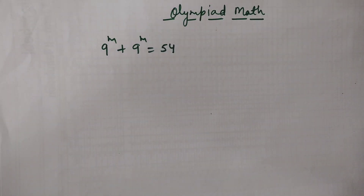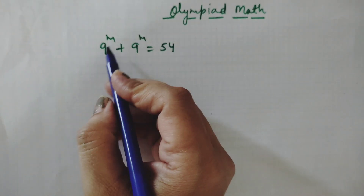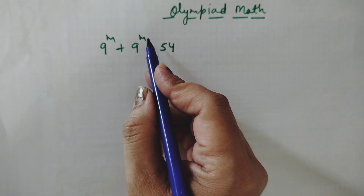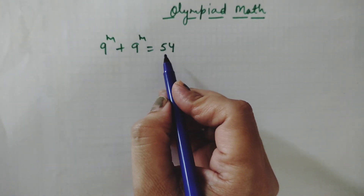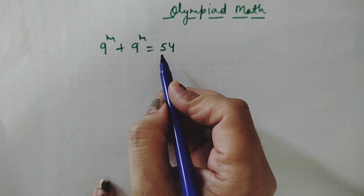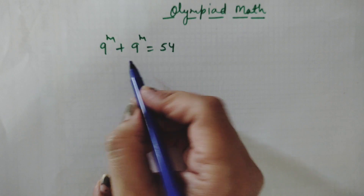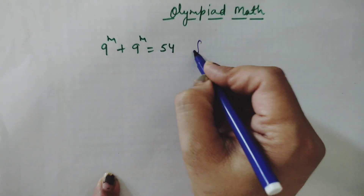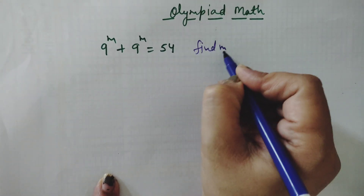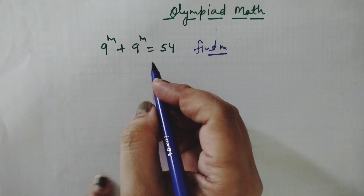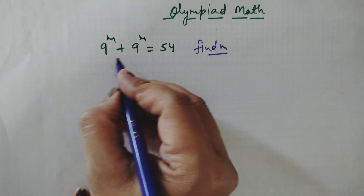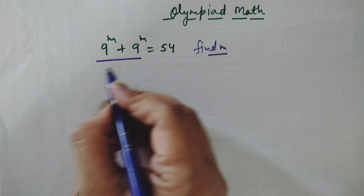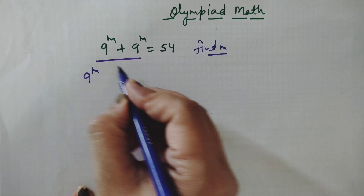Hello everyone, welcome to my YouTube channel. Today we are going to solve another olympiad question: 9 to the power m plus 9 to the power m equals 54. We need to find the value of m.